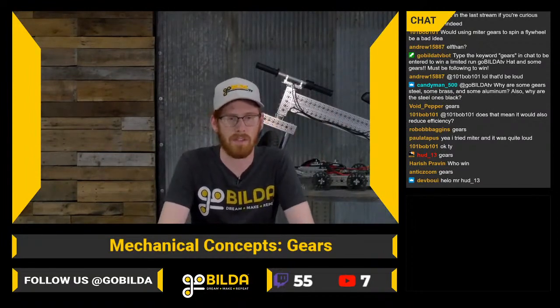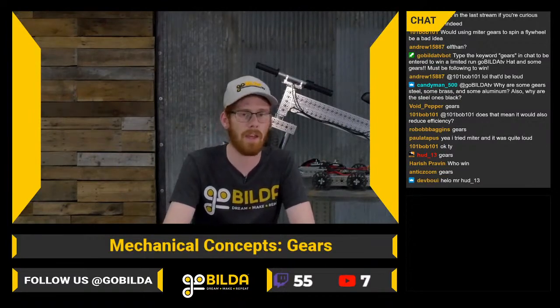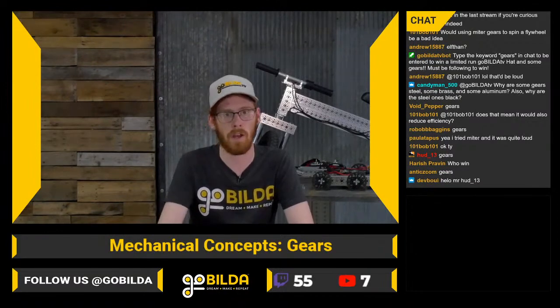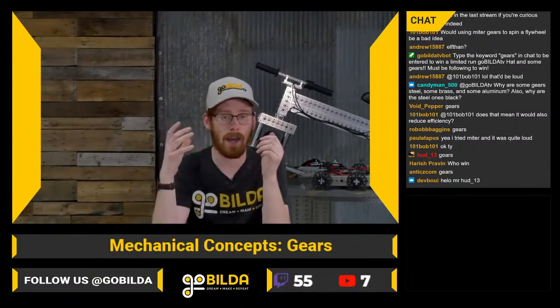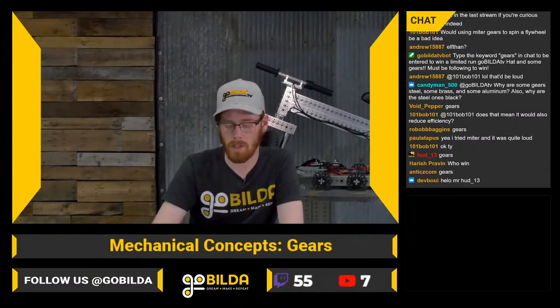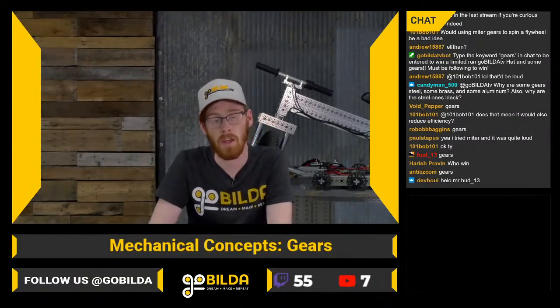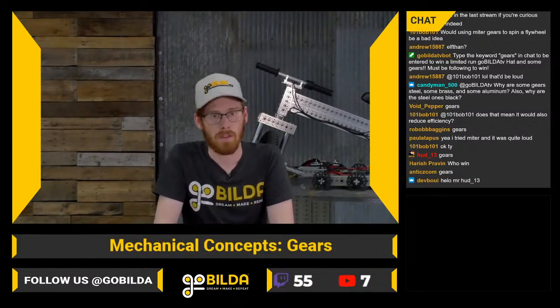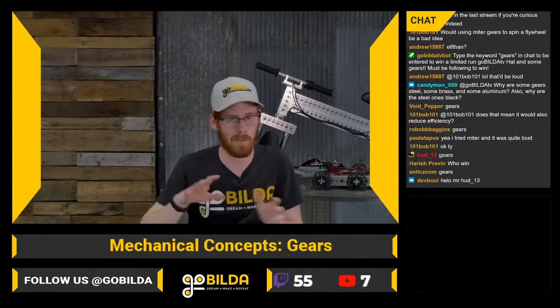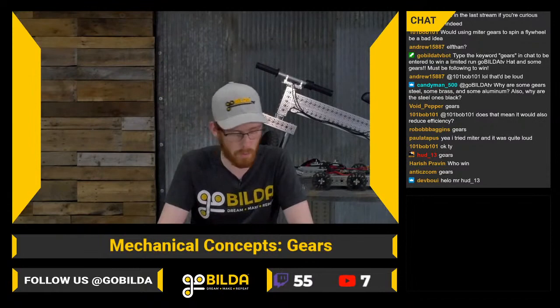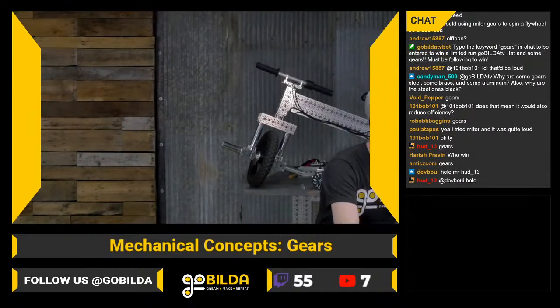If you end up going with a miter gear shooter, consider creating an enclosure around the gear setup and adding lubricant — gear oil or white lithium grease works well. That should get the system running smoother, and the enclosure keeps dust, sawdust, and metal flakes out, which is especially important because debris sticking to grease can really mess things up.